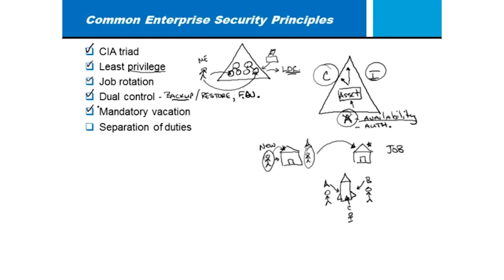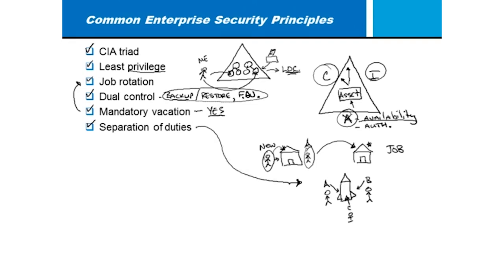Mandatory vacation ties back to the idea of job rotation. If we make it mandatory that you take a vacation — I don't have to tell you when, but you must take a solid week off — an assistant manager can come in and look at how you manage the systems. The backup/restore and firewall examples are the best examples of dual control, while the rocket ship scenario is more about separation of duties — that's the idea: making sure no single person has complete unchecked control.